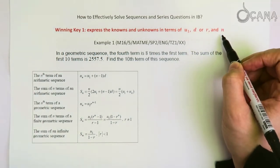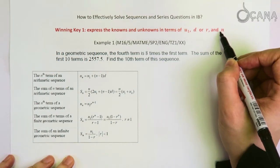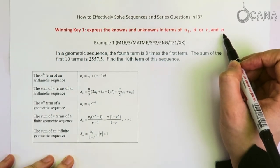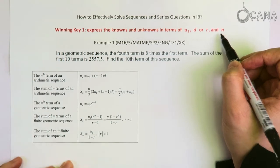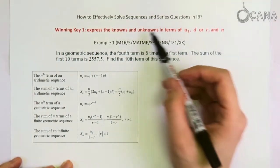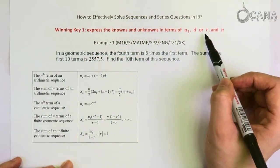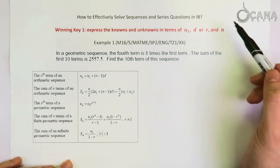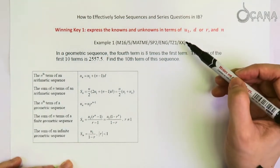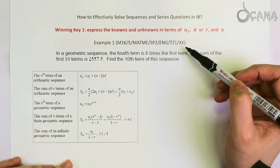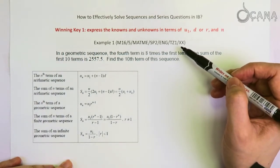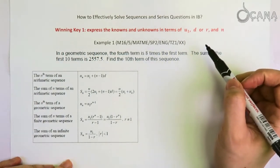And then the third quantity is n, the number of terms or the number of terms that you are at. So in order to demonstrate how to apply this technique, we are going to work on a sample question in the IB past paper question, and this is from 2016.